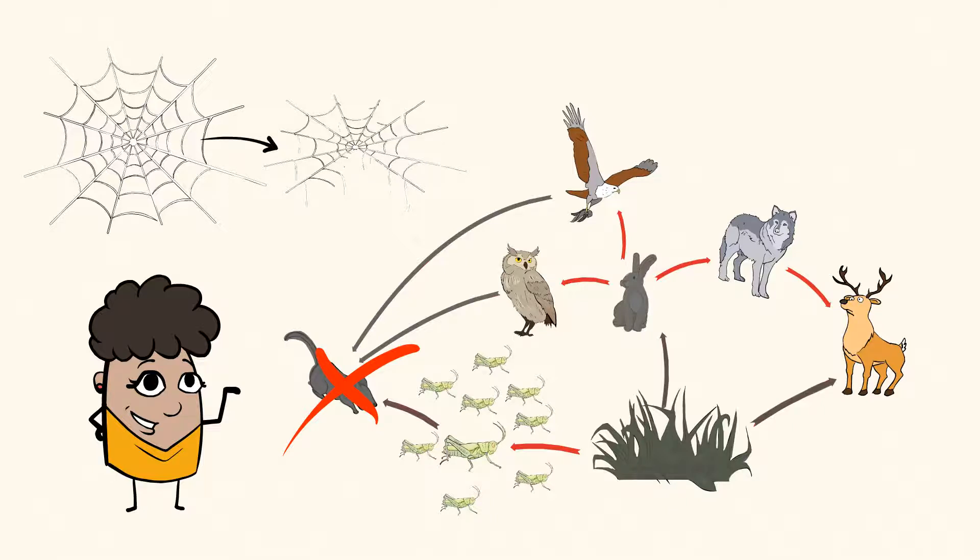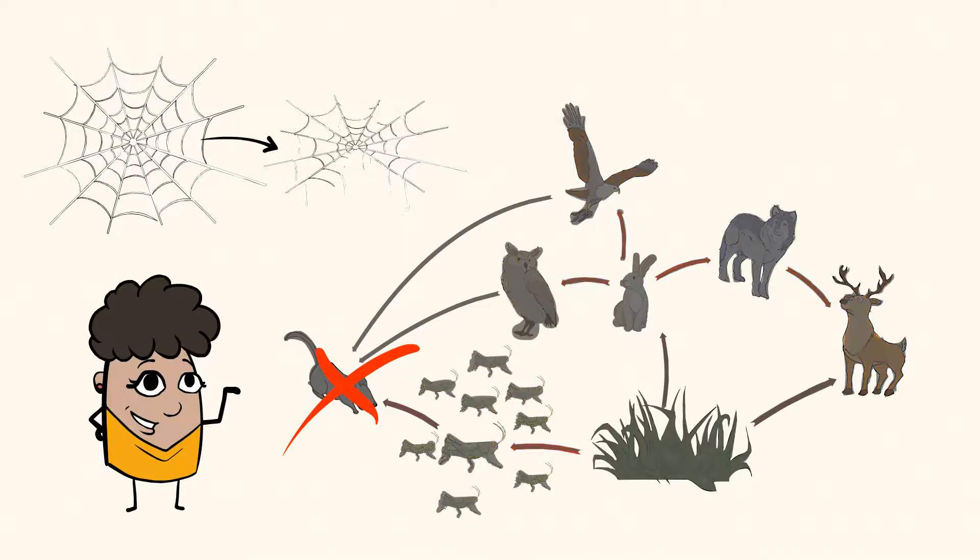So, as you can see, if just one thing in a food web disappears, it would have an effect on the entire connection and ecosystem.